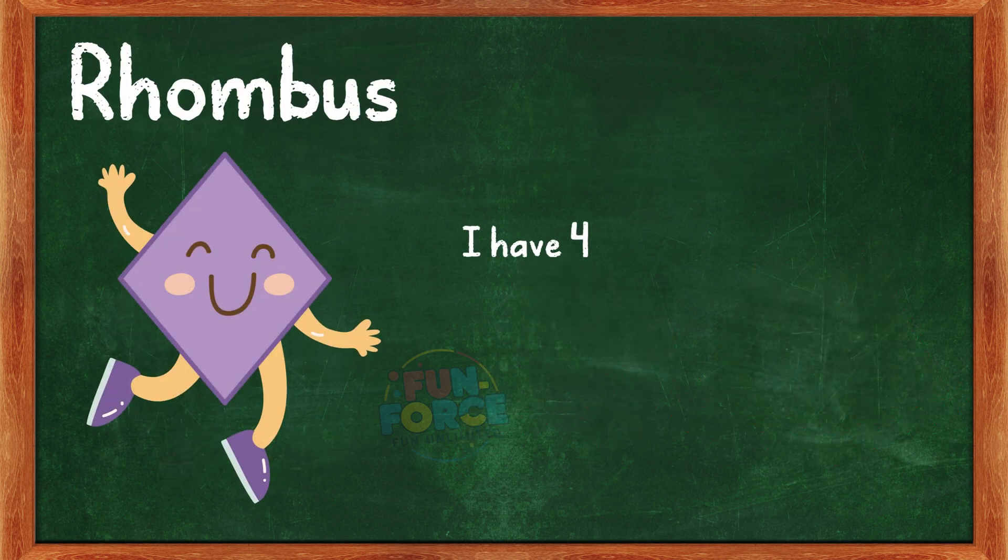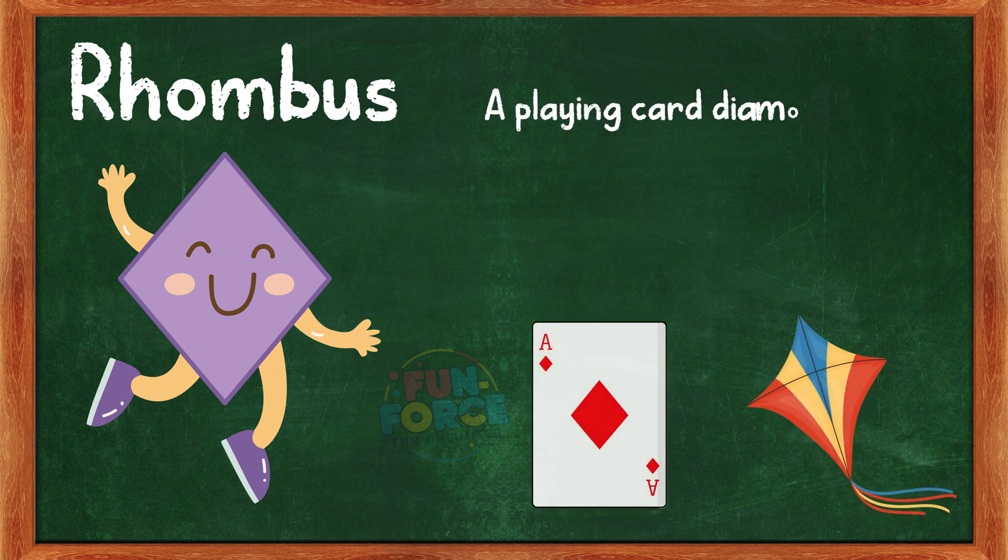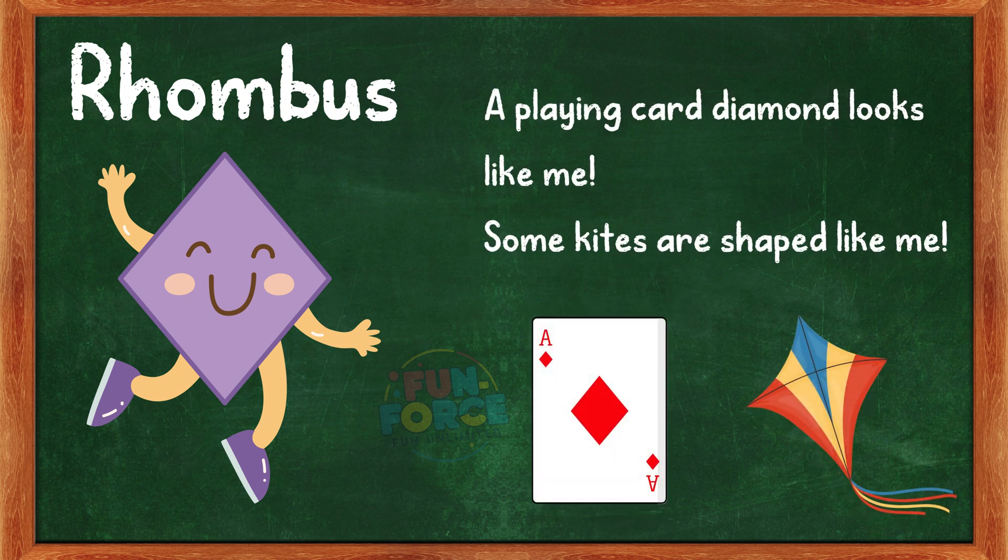I am a rhombus. I have four equal sides, but I tilt like a diamond. Can you guess some objects that are rhombus shaped? A playing card diamond looks like me. Some kites are shaped like me.